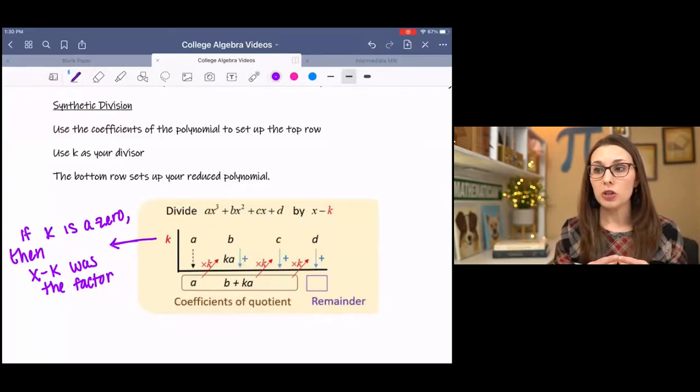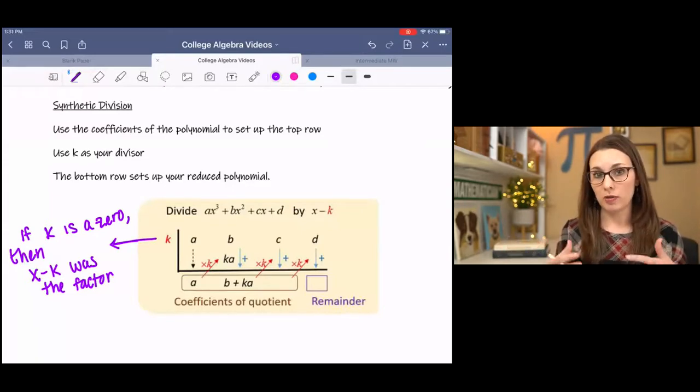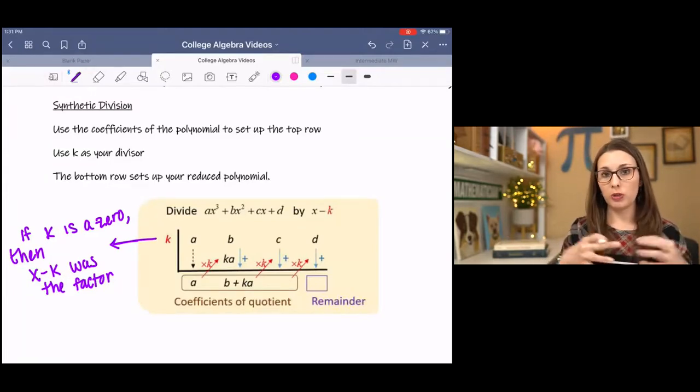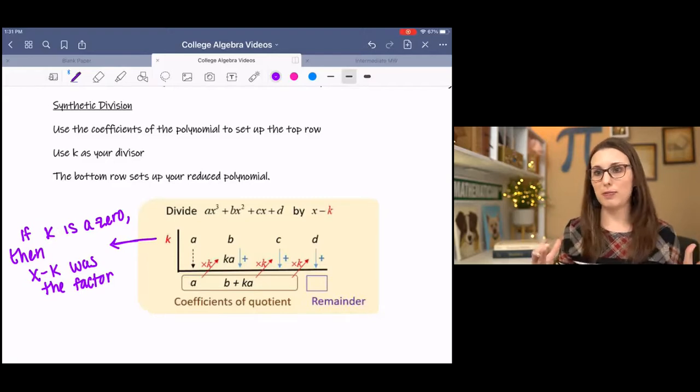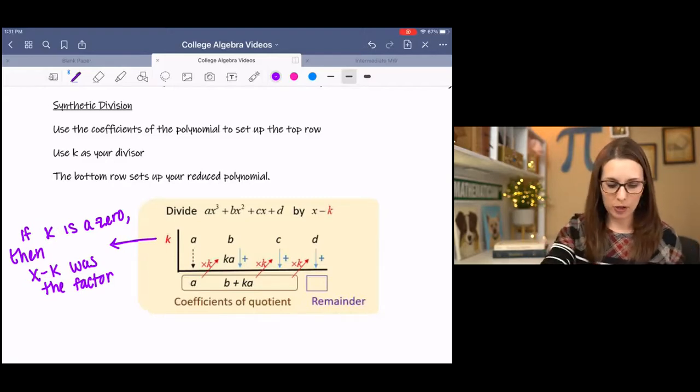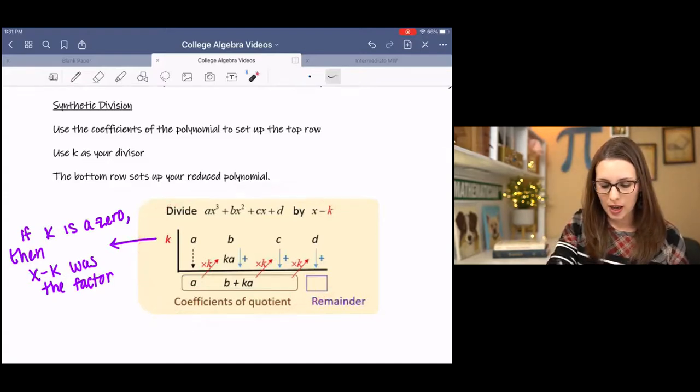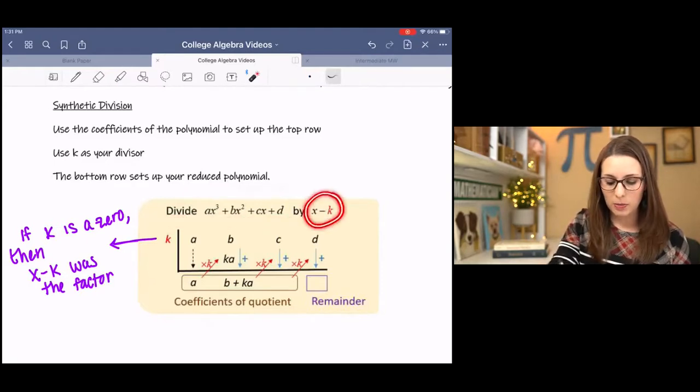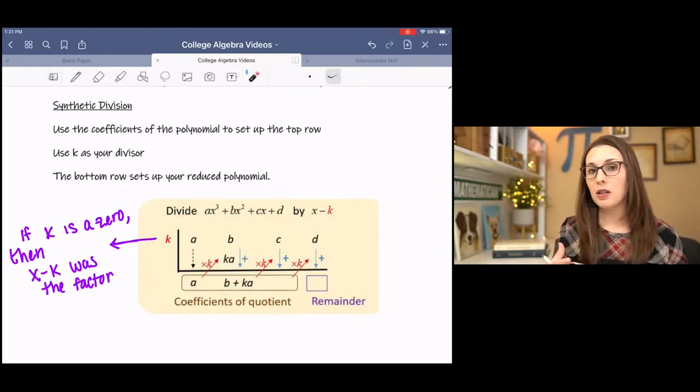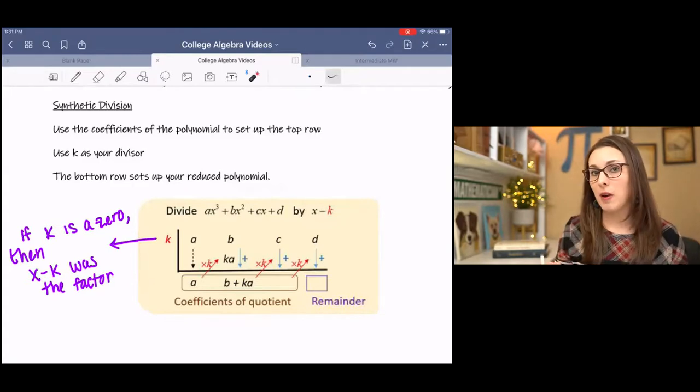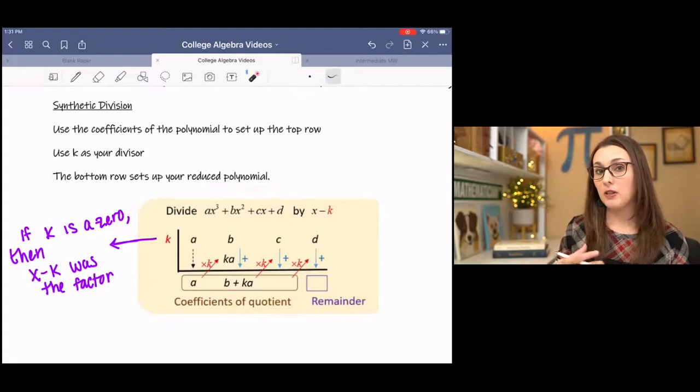You're using k, which is one of the zeros, as a divisor. And then you're using your polynomial to set up this table. I have a picture here of the table, and it's asking us to divide this polynomial by x minus k. We're trying to see if x minus k is a factor of the polynomial. If it's a factor, then its zero is one of our solutions.